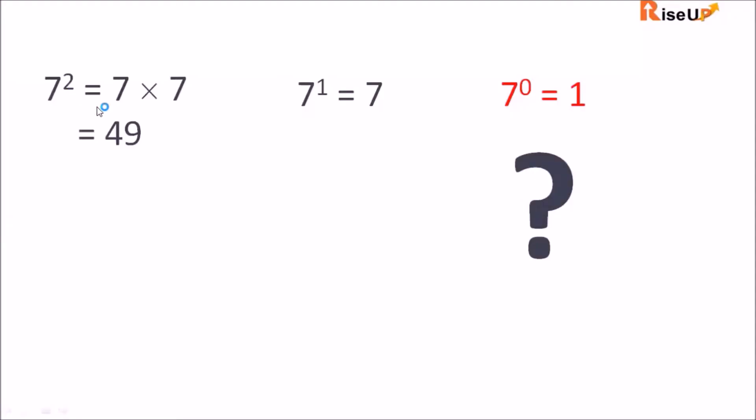We know 7 squared equals 7 times 7, which equals 49. 7 raised to power 1 equals 7. How about this?